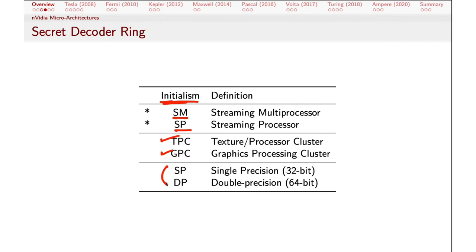There's an important difference between single precision and double precision arithmetic performed by streaming processors. In the early going, because of the density limitations of chip fabrication, early streaming processors tended to be single precision — 32-bit arithmetic — as opposed to double precision, which is 64-bit. To do 64-bit calculations, you had to split them up and run half of each on two different streaming processors, which essentially halved the performance. But at some point NVIDIA figured out ways to get enough transistors on the chip to allow direct double precision arithmetic. We'll point out where we see chips starting to cite both single precision and double precision processing on a single GPU.